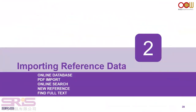Now I'm going to show you how to import reference data from different sources. The first one is from an online database. The second is from PDF. The third one is online search. The first three involve going to a resource database to get references or PDFs and then importing into your library. The fourth option, New Reference, is for manually adding a new reference into your library.